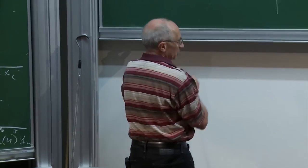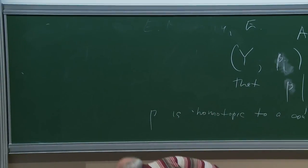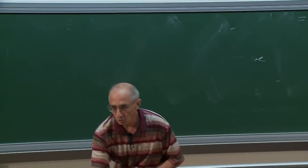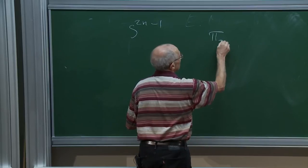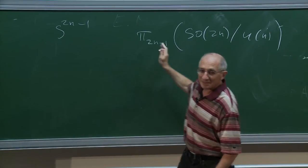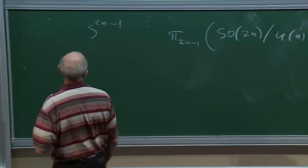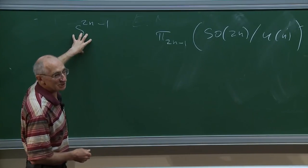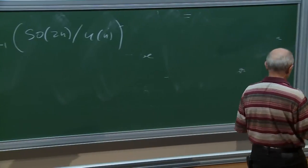For instance, on the sphere S^{2n-1}, the number of over-twisted contact structures up to isotopy is precisely the computation of a metastable homotopy group, computed in the 1960s by Bruno Harris. So we know the precise answer in every dimension. For example, on the five-dimensional sphere there is a unique one.